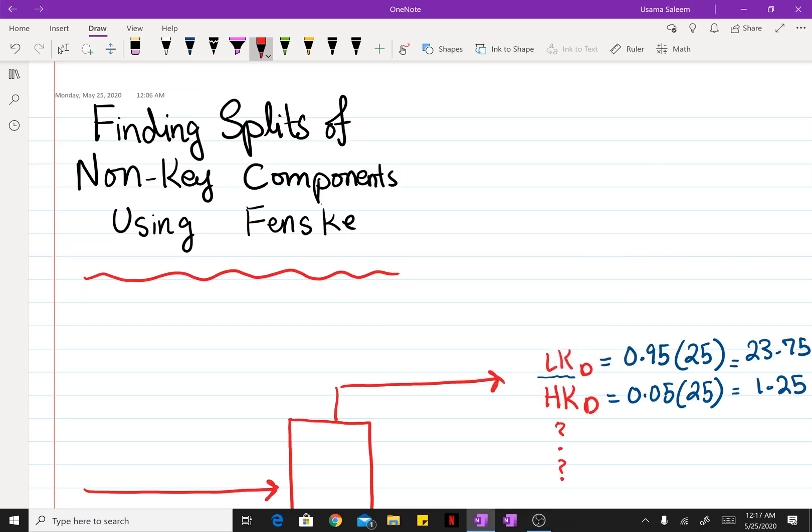In the previous video, we used the Fenske equation to find the minimum number of stages for a specified split between a light key and a heavy key. Now, once you've found the minimum number of stages using the Fenske equation, you can use that number to find the splits of the non-key components between the distillate and the bottom.